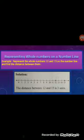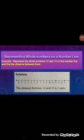Now we will study how to represent whole numbers on a number line. First, we will draw a straight horizontal line and mark a point on the extreme left, labeling it as 0. Mark another point to the right of 0 and label it as 1. The distance between points 0 and 1 is the unit distance. Mark one more point to the right of 1 at a distance of 1 unit and label it as 2. Keep marking points and labeling them as 3, 4, 5, etc. at equal distances.